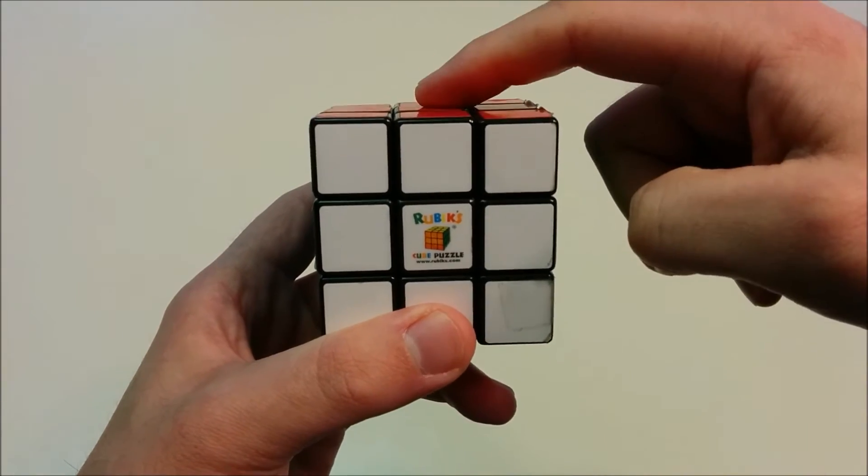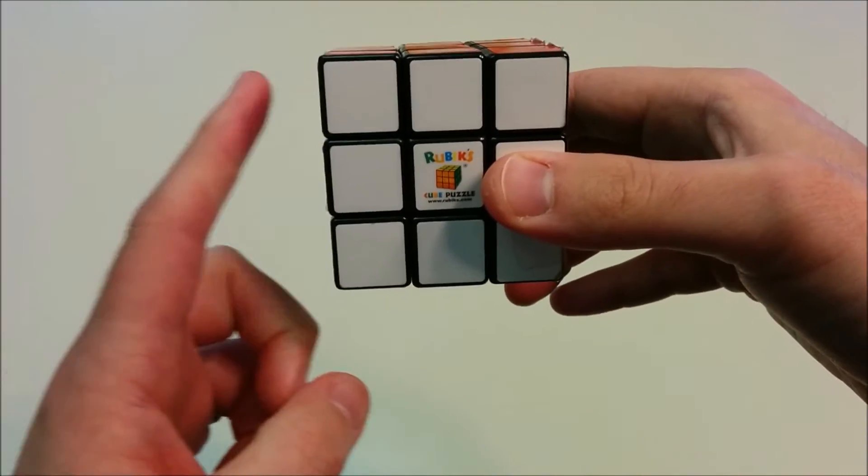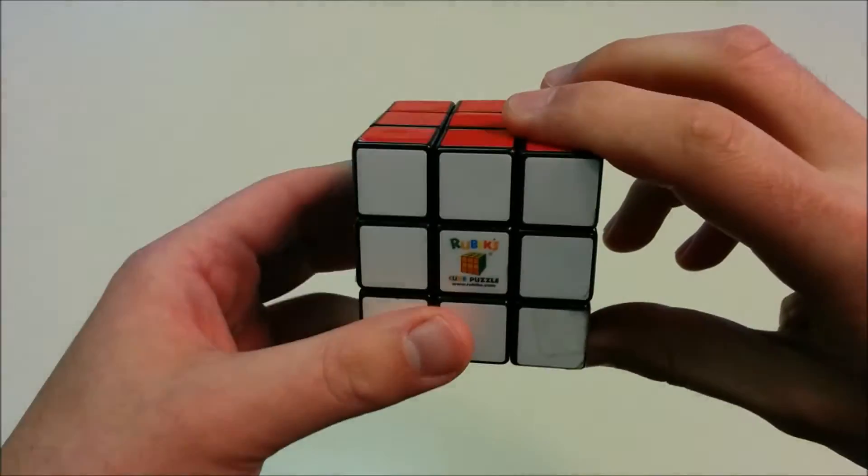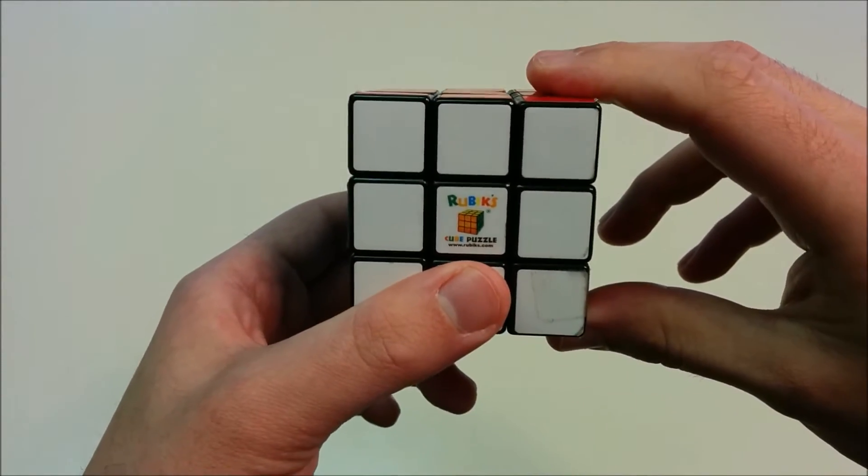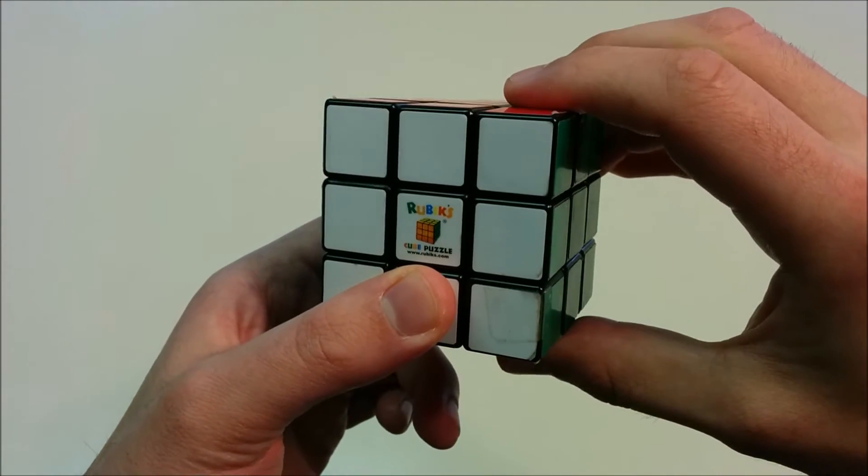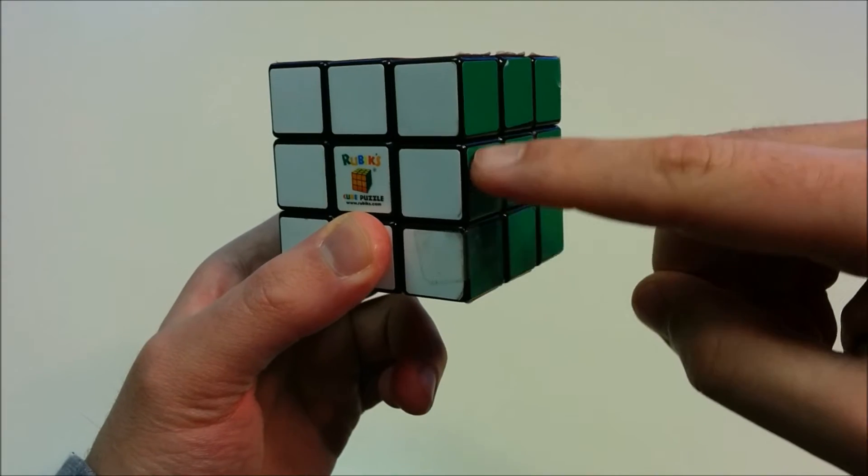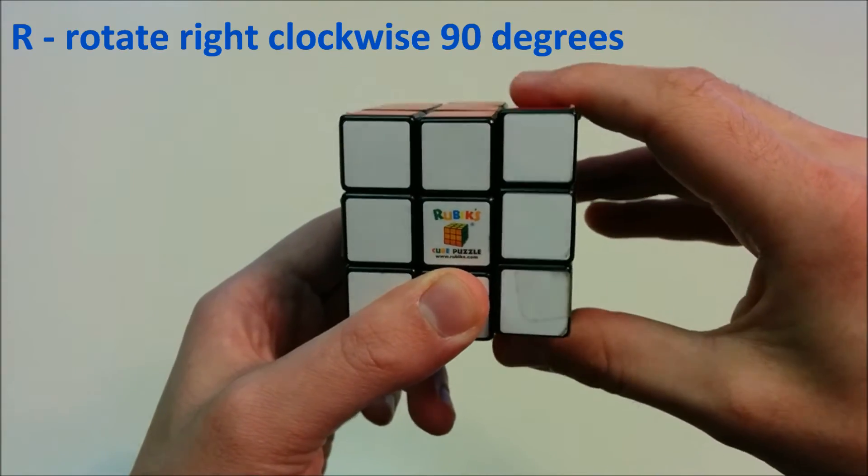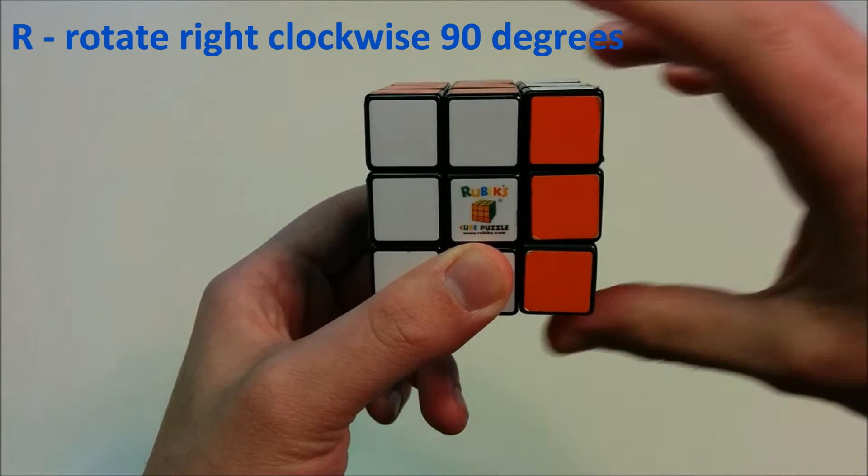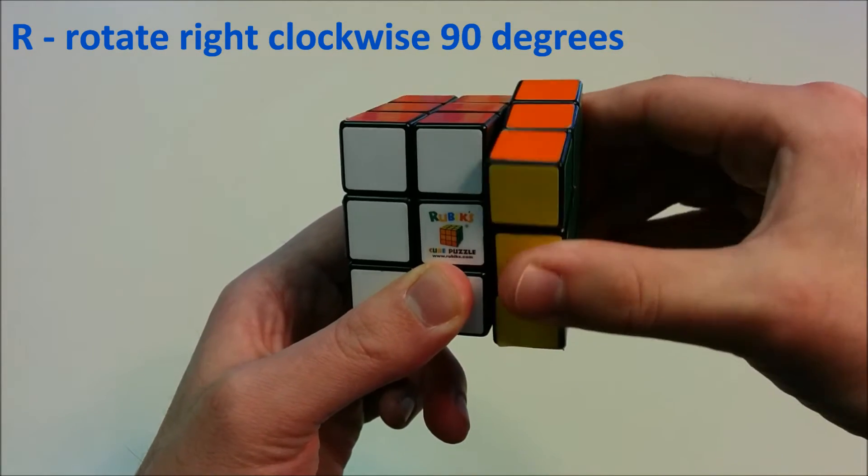The other sides of the cube are given positions relative to the face we're looking at. For example, if we look at the face to the right of the face we're looking at, the side to the right of what we're looking at, a 90 degrees clockwise move is denoted R for right.